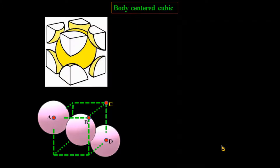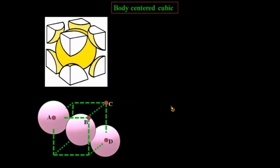The next one is the body-centered cubic unit cell. In a body-centered unit cell, eight atoms are present at the eight corners of the cube and one atom is present in the center of the body. It is made up by the contribution of two spheres only.